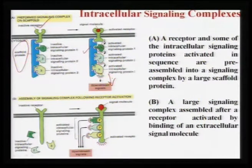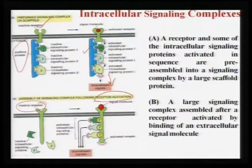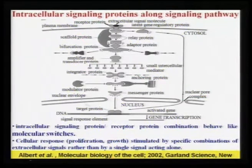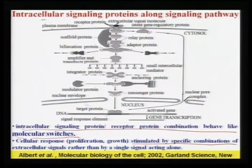Assembly of signaling complex following receptor activation: you have an inactive receptor, your signal molecule comes, and these are three different signaling proteins 1, 2, 3. These signaling proteins are activated because of the molecular switches, and again a large number of intracellular signaling pathways can be generated. The intracellular signaling protein-receptor combination behaves more like molecular switches. Cellular responses like proliferation and growth can be stimulated by specific combinations of extracellular signals rather than by a single signal acting alone.